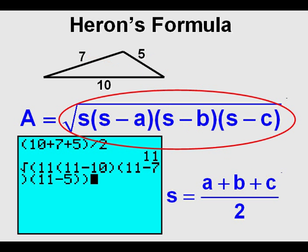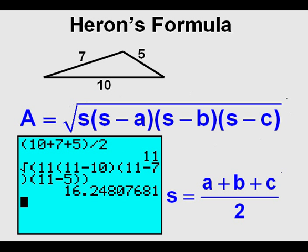Now we plug in 11 for S and 10 for A, 7 for B, and 5 for C again in Heron's formula. And this is what it looks like in the calculator. To get the square root sign, press 2nd, then the x-squared key on the left side of the pad. What is typed into the calculator is this formula with the numbers for all the sides A, B, and C, along with 11 for S, the semi-perimeter.